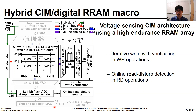In the proposed RRAM macro, the resistance monitoring is conducted in write and read operations. During write operations, the write verification block estimates whether an RRAM cell is programmed within the target range of resistances. If the resistance is out of the target range, iterative write operation is conducted while adjusting the pulse width. In the online read-disturb detector, the read disturb of RRAM cells is monitored in the background without hindering MAC operations.